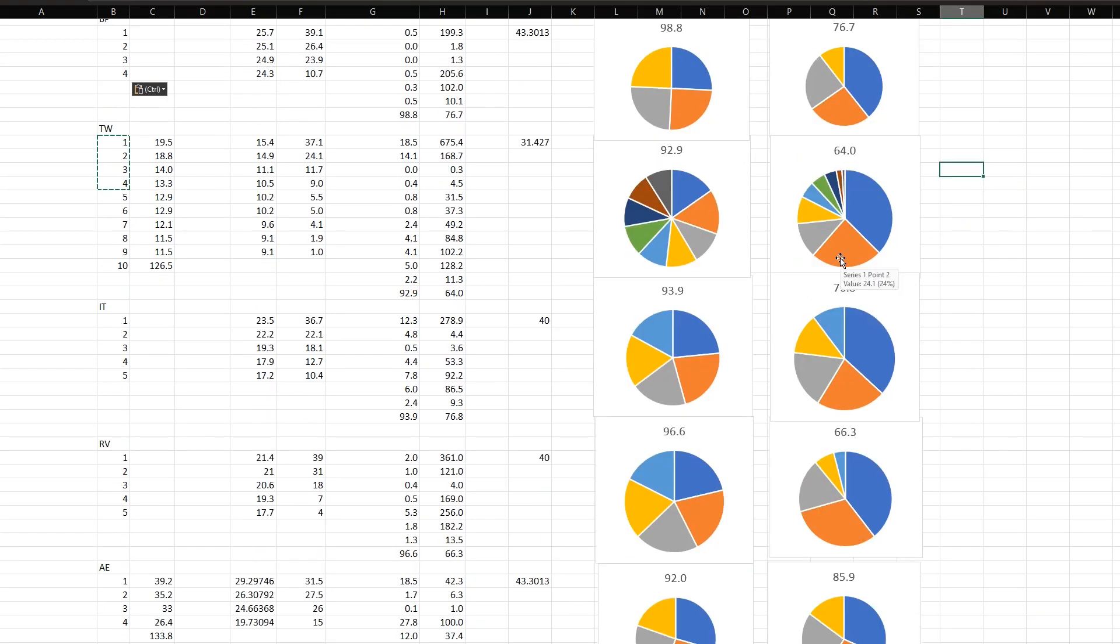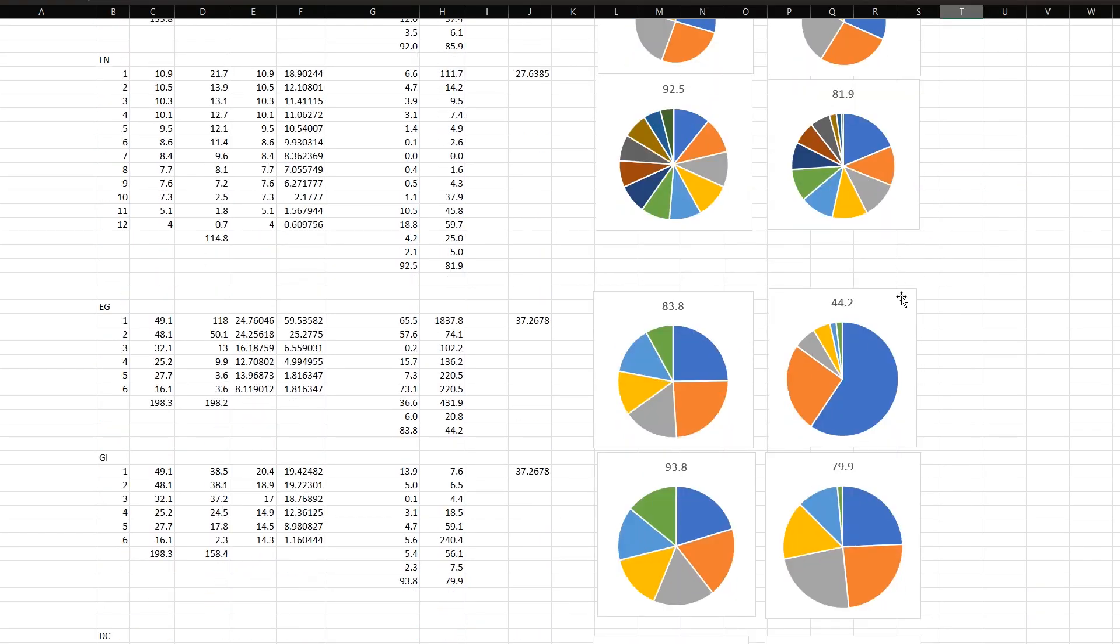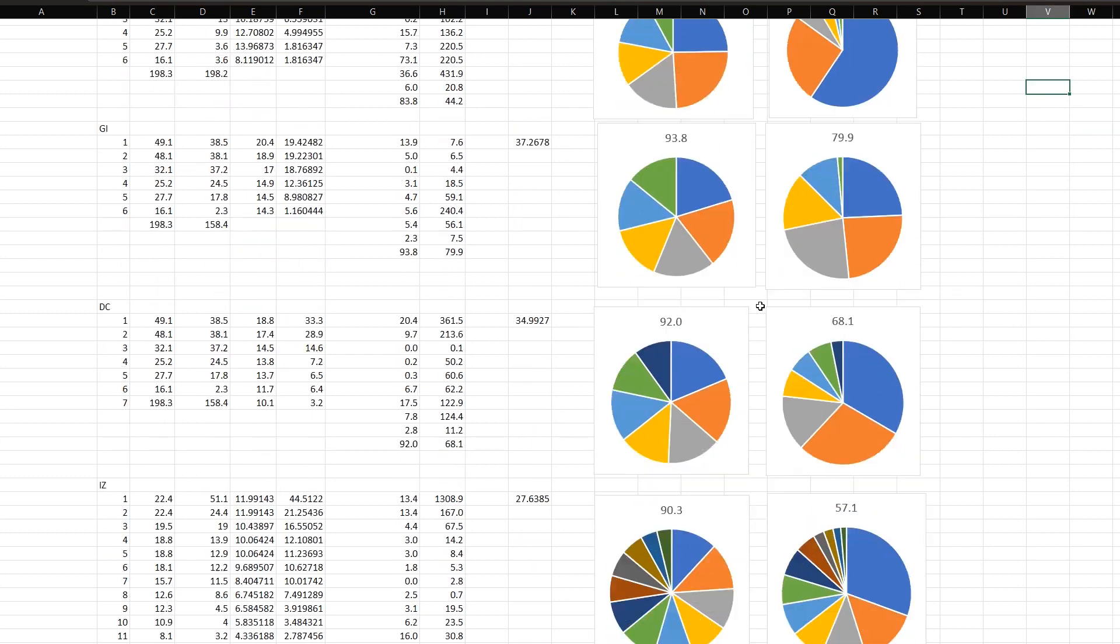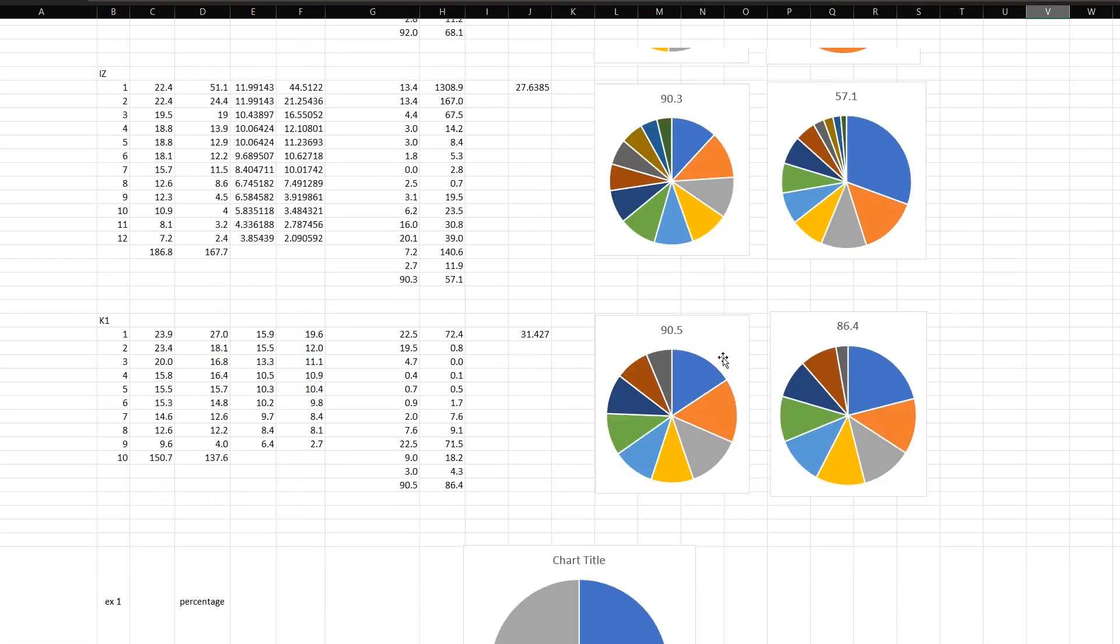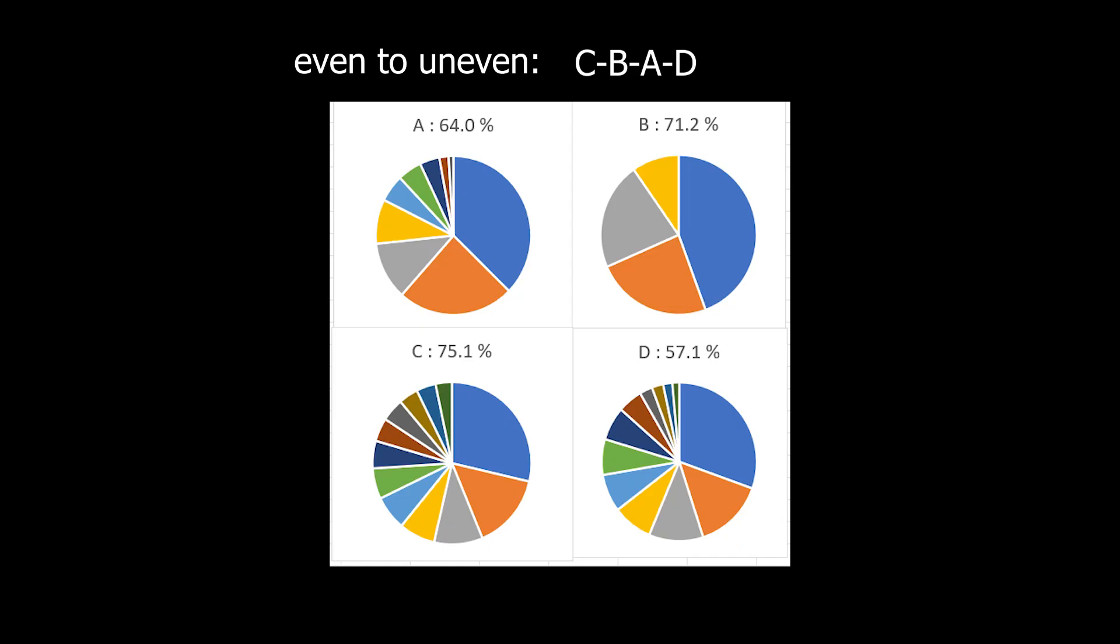I calculated the values of the worst and best pie charts from several groups. What do you think? Can this value represent how even the line distribution is? At the beginning of the video there are several pie charts and this is the value of how even the distribution is.